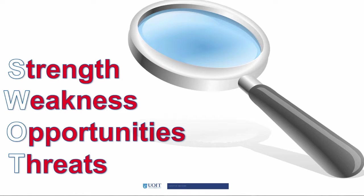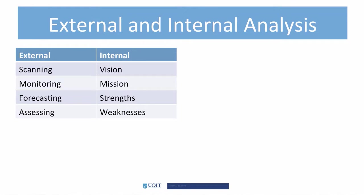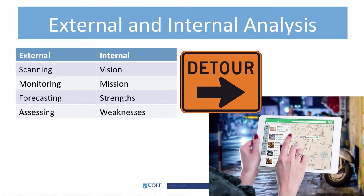A SWOT analysis is one type of an environmental scan. An external environmental assessment will include scanning, monitoring, forecasting, and assessing. An internal assessment will typically include examining the vision and mission of the organization and examining its internal strengths and weaknesses. Organizational leaders must analyze this information and create a strategic direction, from which they can carry out their strategic plan.